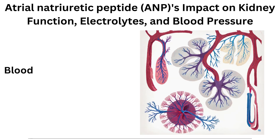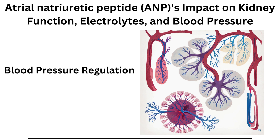Blood Pressure Regulation: ANP exerts vasodilatory effects on blood vessels, particularly the afferent arterioles of the kidneys. This vasodilation reduces systemic vascular resistance, leading to a decrease in blood pressure. The combination of increased sodium and water excretion, along with vasodilation, helps to decrease blood volume and lower blood pressure.